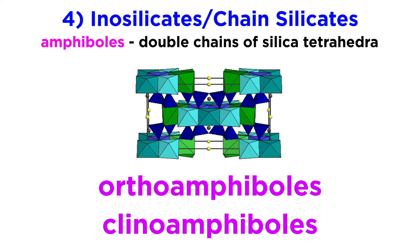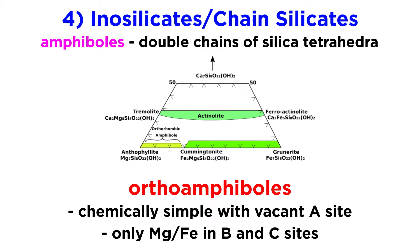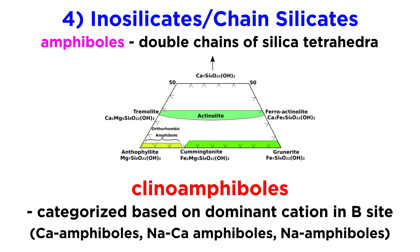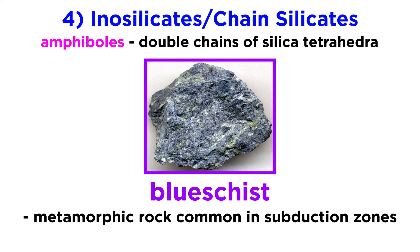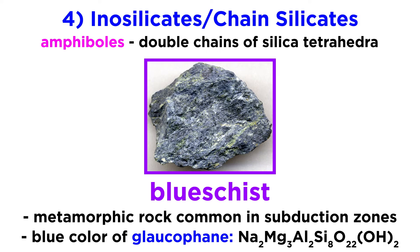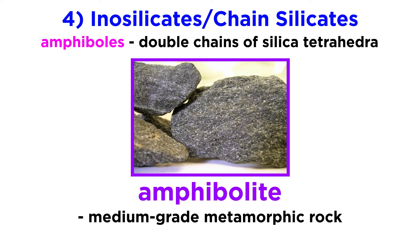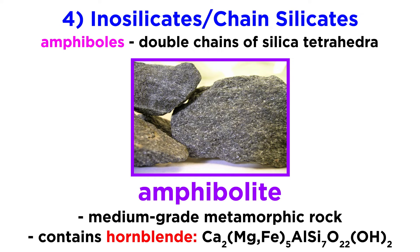Like the pyroxenes, amphiboles are broken down into orthoamphiboles and clinoamphiboles, and of course there is extensive solid solution among their respective endmembers. Compared to clinoamphiboles, orthoamphiboles are chemically simple, having a vacant A site and only magnesium and iron in the B and C sites. Clinoamphiboles are classified based on the dominant cation in the B site: calcium amphiboles, sodium-calcium amphiboles, or sodium amphiboles. Blue schist, a class of metamorphic rock common in subduction zones, gets its name from the blue color of the sodium amphibole glaucophane, Na2Mg3Al2Si8O22(OH)2. The medium-grade metamorphic rock amphibolite typically contains calcium amphiboles such as hornblende.